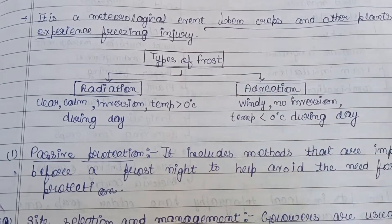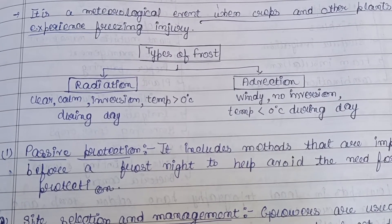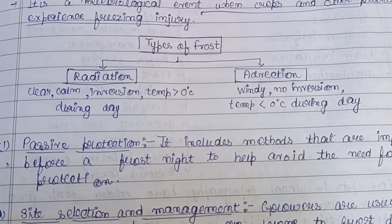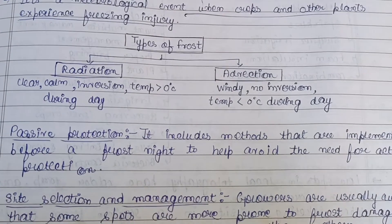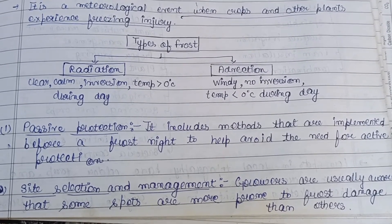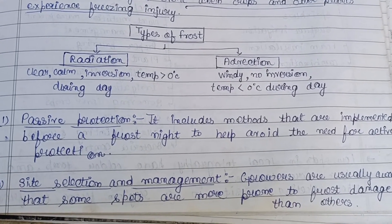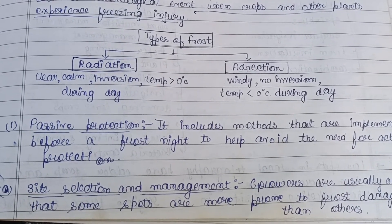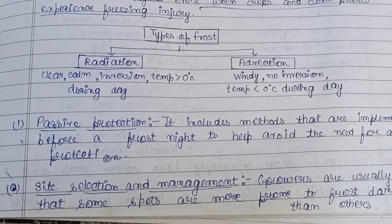There are two types of methods for protection from frost. First is passive protection and second is active protection. Passive protection includes methods implemented before a frost night to help avoid the need for active protection. It is implemented before the occurrence of frost to help tackle it more effectively.